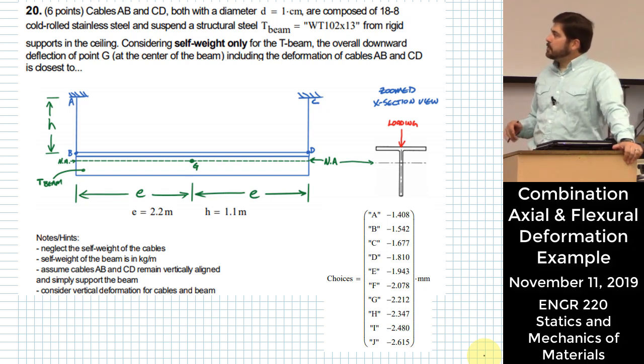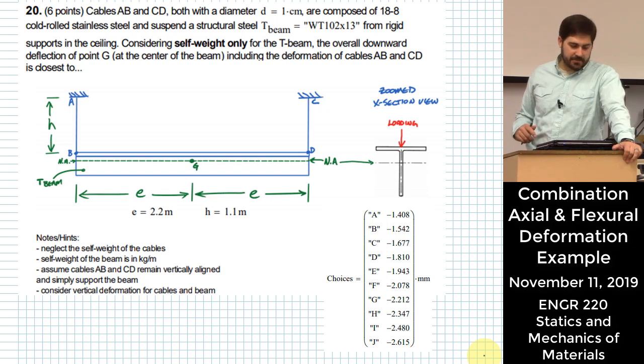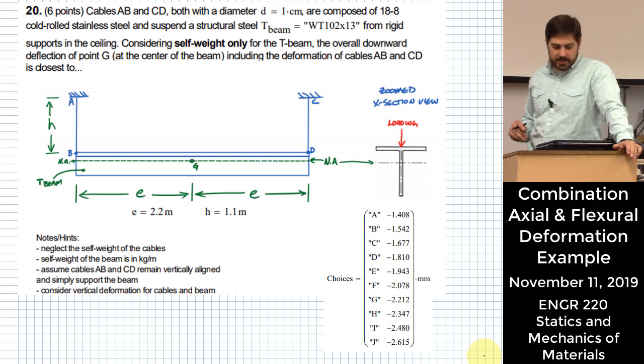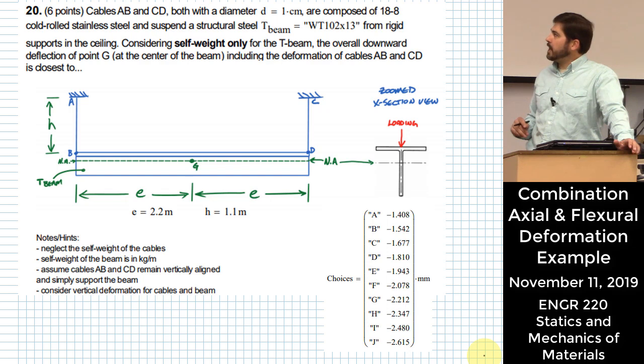Alright, so for this one we have two cables, cable AB and CD, and the cables each have diameters of one centimeter, and those cables are composed of 18-8 cold-rolled stainless steel. They suspend a structural steel T-beam, which is a WT-102 by 13, and they are suspended from rigid supports in the ceiling. If the only thing we're looking at is the self-weight of the beam, then the overall downward deflection of point G, including the deformation of cables AB and CD, is closest to,